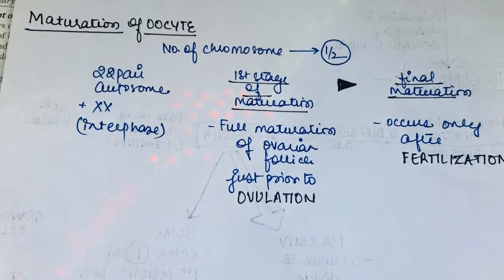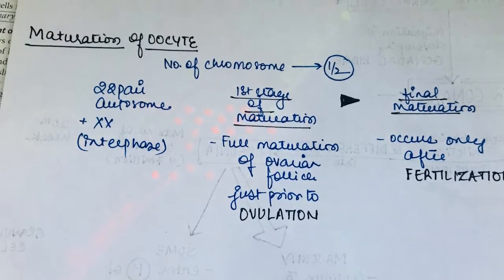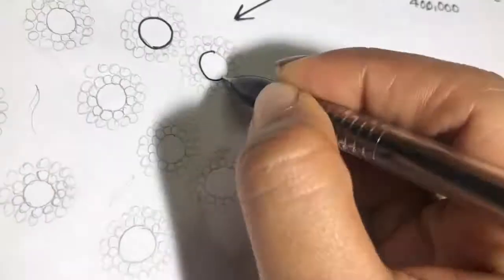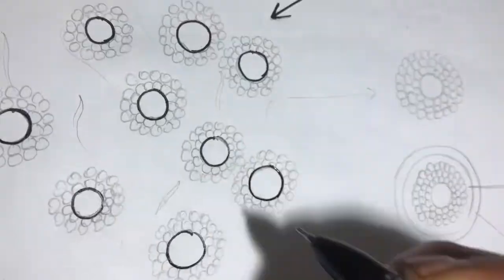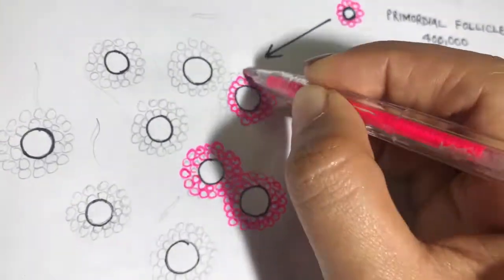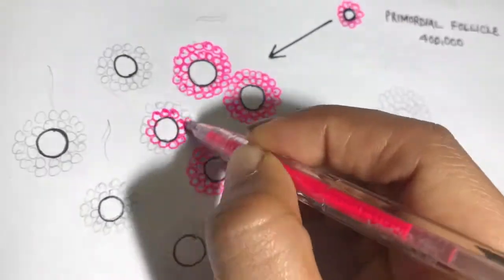Now in the beginning, two main things happen. First, there is moderate enlargement of the ovum itself, which increases in diameter twofold to threefold, which is followed by the growth of additional layers of the granulosa cells in some of the follicles.